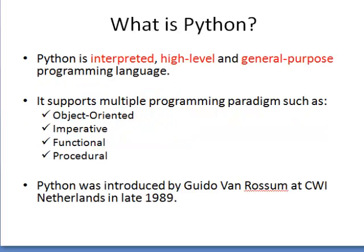Let's start with what is Python. Python is an interpreted, high-level and general-purpose programming language, which is considered better than other programming languages like C, which is a procedure-oriented language, and C++ and Java, which are object-oriented. Python supports multiple programming paradigms such as object-oriented, imperative, functional, and procedural, meaning the programmer can write programs based on any one of these approaches.